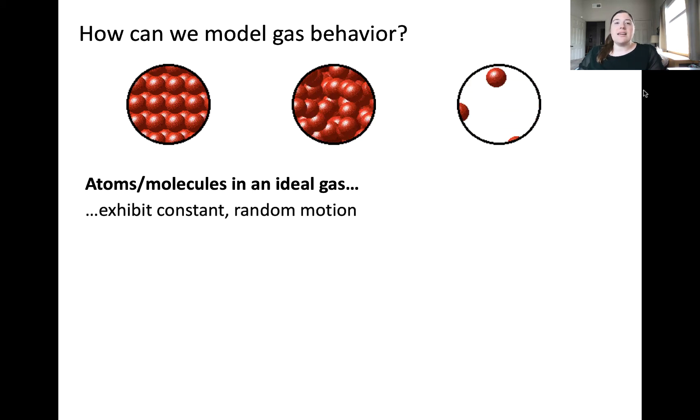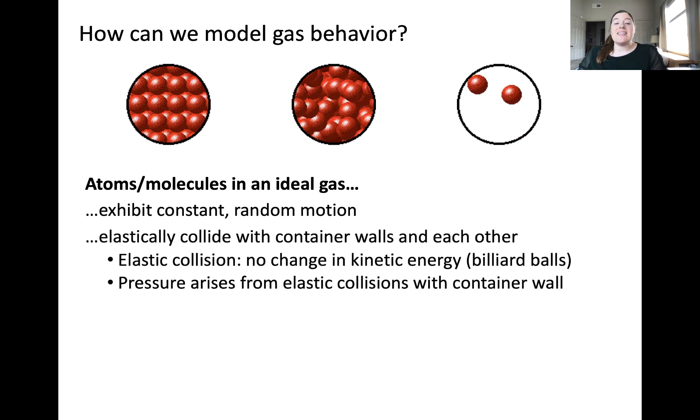The first is that gas particles exhibit random constant motion. The second is that they elastically collide with their container and each other. Elastic collisions are collisions in which there is no change in kinetic energy of the particles before and after they collide. You can think about this as the analogy of billiard balls hitting each other and bouncing away from one another.